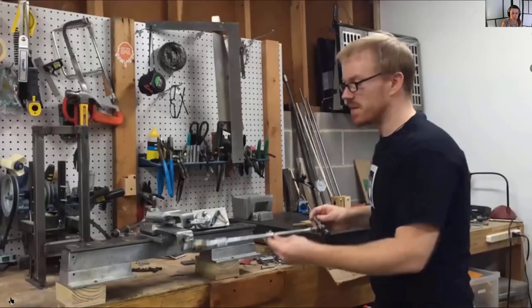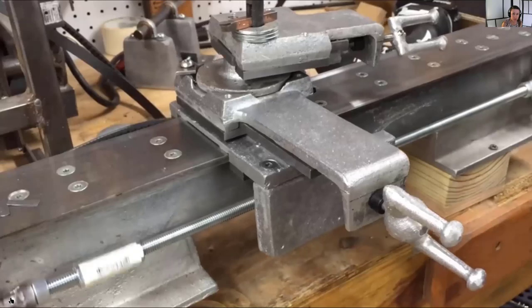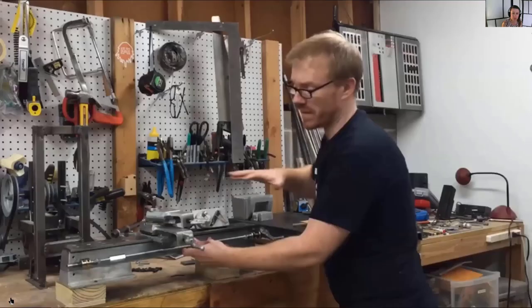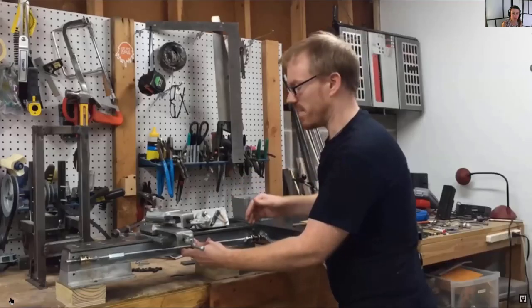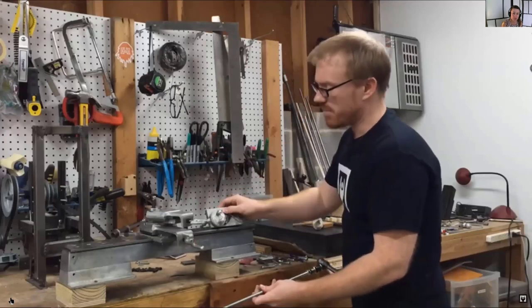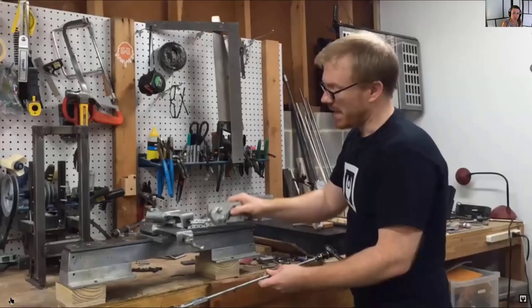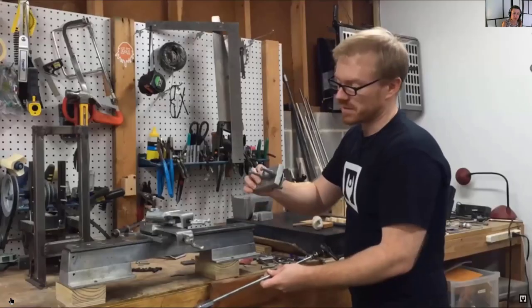The lead screw is the part that mounts on the front of the lathe and it gives the operator the ability to move the carriage along the length of the bed. The apron, a square part there, is the part that attaches to the carriage assembly.